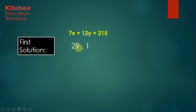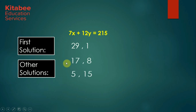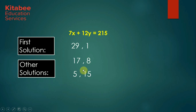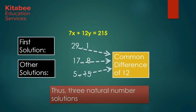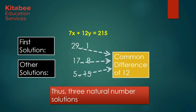The first value of x is 29 and first value of y is 1. The other solutions are 17, 8 and 5, 15 — subtracting 12 from x and adding 7 to y each time. The values of x are at a common difference of 12, and as we decrease x we increase y. These are the three solutions, so there are only three natural number solutions to the equation 7x plus 12y equal to 215.